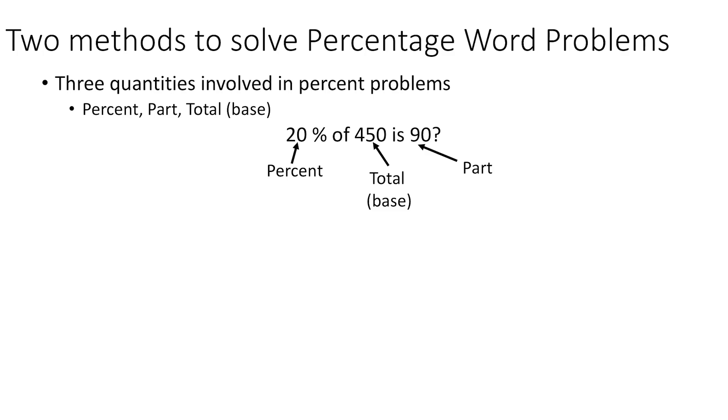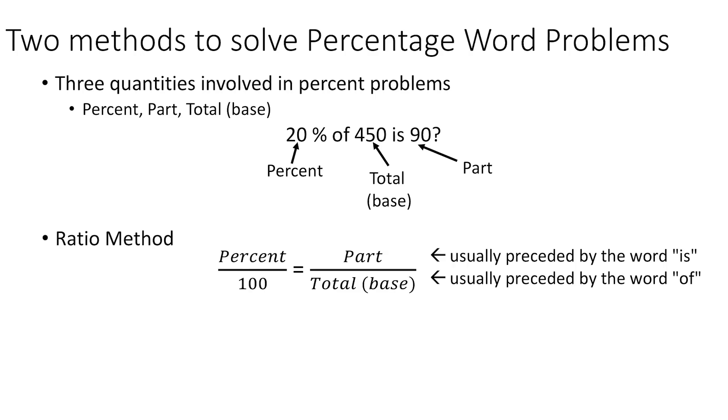We're going to look at two ways of solving these questions. The first one is the ratio method. The ratio method compares the percent fraction on the left, whatever it is over the 100, to the actual numbers on the right where you have the part divided by the total or the base.